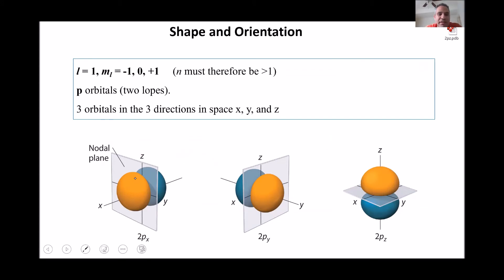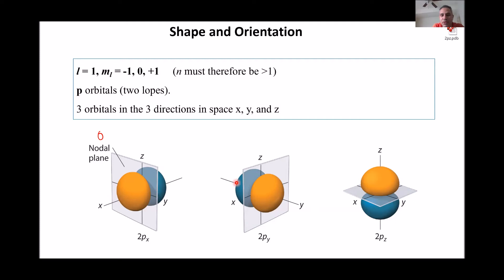For l = 1, the electron cloud has a different shape: two loops along a certain axis with a node — a point of zero probability — in between. Since this orbital is oriented along certain axes, there are three p orbitals per set: one oriented along the x-axis, one along the y-axis, and one along the z-axis.